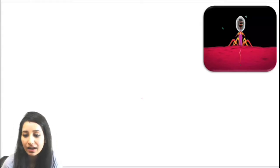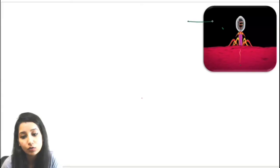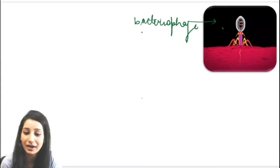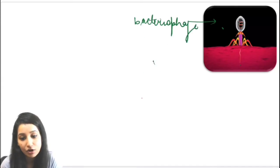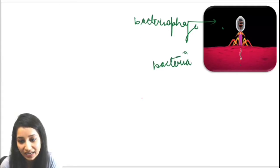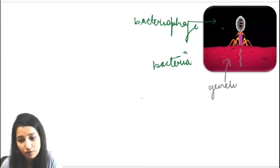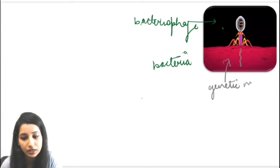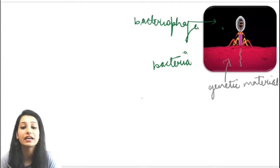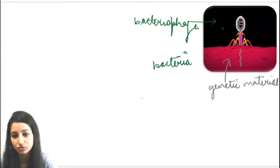In this picture you can see a bacteriophage. What is a bacteriophage? A bacteriophage is an organism that has the capability to infect bacteria. So a bacteriophage can infect a bacterium, and in this process it will insert its genetic material into the bacteria. Using this simple process, there can be another thing done — that is transduction.